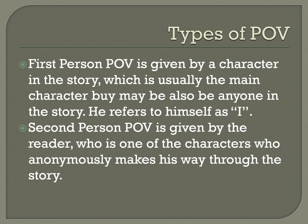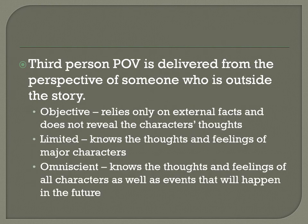The first person point of view is given by a character in the story, which is usually the main character, but may also be anyone in the story. He refers to himself as I. The second person point of view is given by the reader, who is one of the characters, who anonymously makes his way through the story. The third person point of view is delivered from the perspective of someone who is outside the story. The objective third person relies only on external facts and does not reveal the character's thoughts. A limited third person knows the thoughts and feelings of a major character. And an omniscient third person knows the thoughts and feelings of all the characters as well as all the events that will happen in the future.